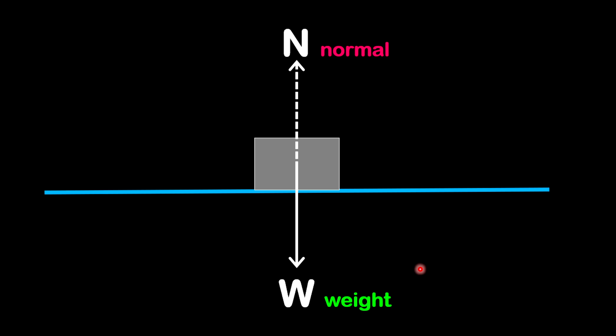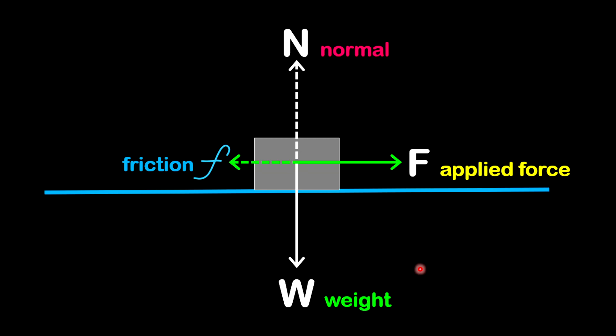Now think about applying a force to the object by pulling or pushing. If you're pulling towards the right, this pulling force will be called the applied force. Opposing the applied force will be a force of friction. The frictional force depends on a number of things — it could depend on the weight of the object, and it also depends on how smooth or rough the surface is.